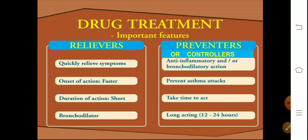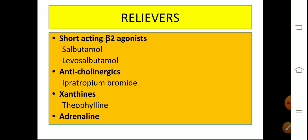Drug treatment of asthma uses two types of drugs: relievers and controllers/preventers. Relievers are usually short-acting, fast-onset drugs that quickly relieve symptoms — they are usually bronchodilators. Controllers are usually anti-inflammatory drugs, with or without bronchodilator action; they prevent asthma attacks or exacerbations, take some time to act but are long-acting, and are a must in every asthma treatment plan. Examples of relievers: SABAs — short-acting beta-2 agonists — salbutamol, levosalbutamol; anticholinergics — ipratropium bromide; xanthines — theophylline (used very rarely); and subcutaneous adrenaline.